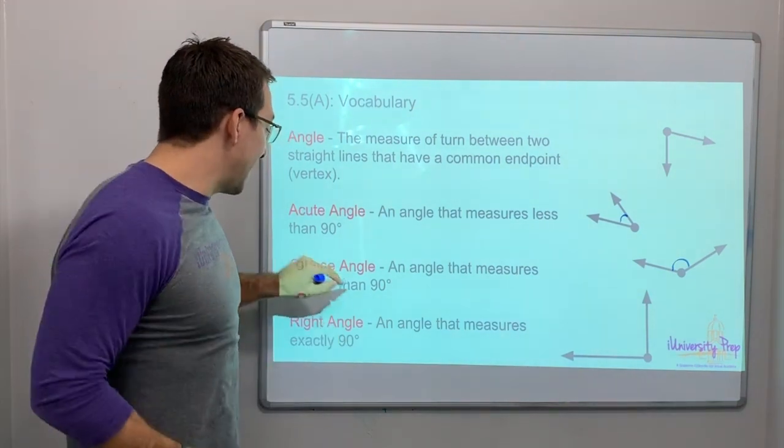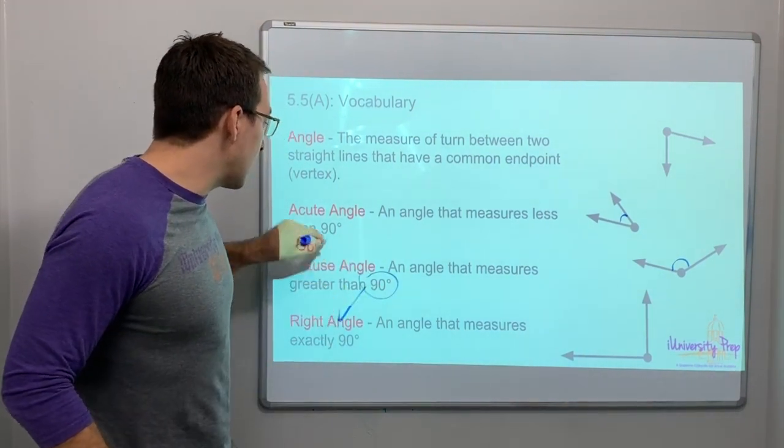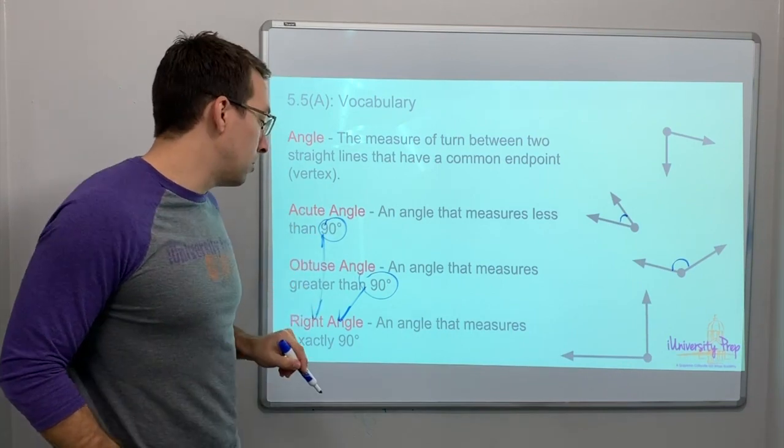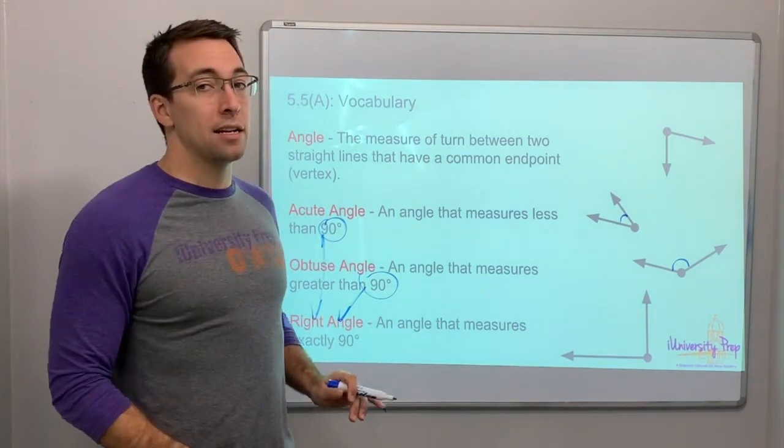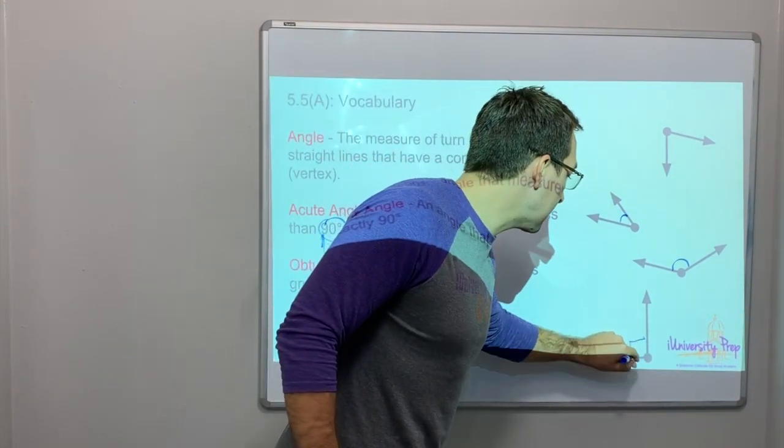A right angle. Guys, 90 degrees is a right angle. A right angle is an angle that measures exactly 90 degrees, and that is going to be notified like this.